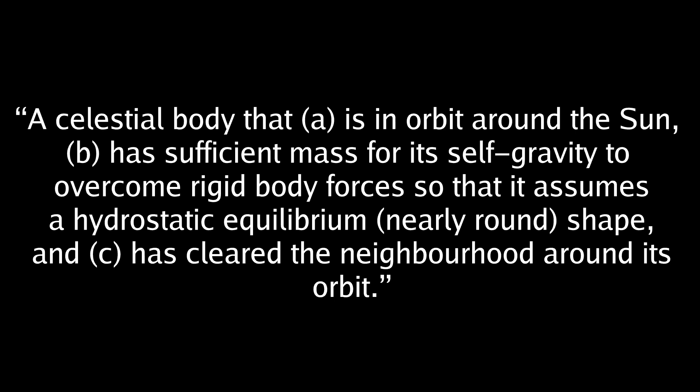B, has sufficient mass for its self-gravity to overcome rigid body forces, so that it assumes a hydrostatic equilibrium, nearly round shape. And C, has cleared the neighborhood around its orbit. This definition is what excluded Pluto. To be honest, this definition has a lot of problems with it.